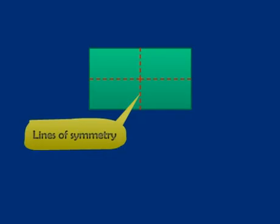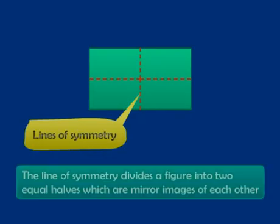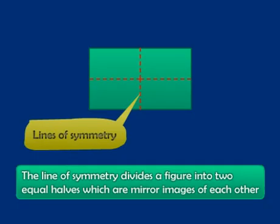What does this mean? This means that each of these two lines divides the rectangle into two halves and the two halves are mirror images of each other. Right? That is what is the definition of a line of symmetry.